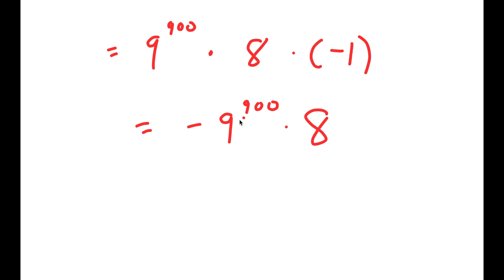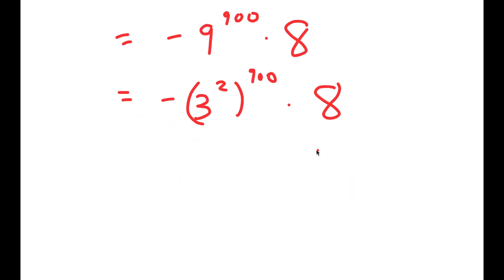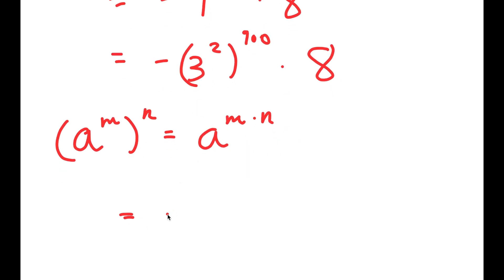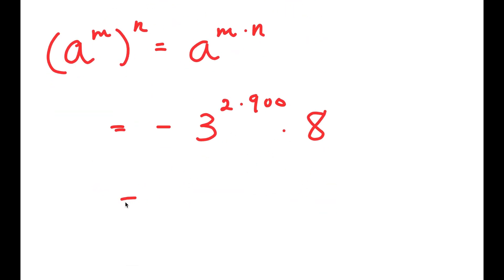Now I'm going to rewrite 9 to the power of 900 as 3 squared to the power of 900 — all I did was rewrite 9 as 3 squared. From here, I can use the property a to the power of m to the power of n equals a to the power of m times n. So 3 to the power of 2 to the power of 900 turns into 3 to the power of 2 times 900, and 2 times 900 is 1800.